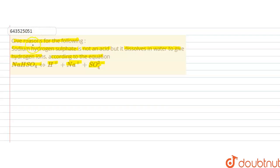In this question we have to give the reason that sodium hydrogen sulfate is not an acid but in water, when it is dissolved, it gives H plus ions. Acids are those species which give H plus ions on dissolution in water.